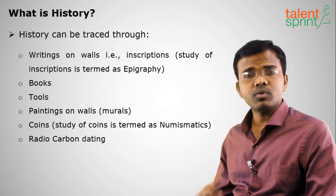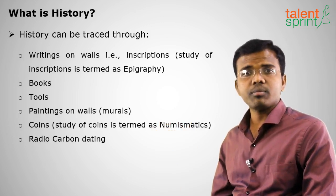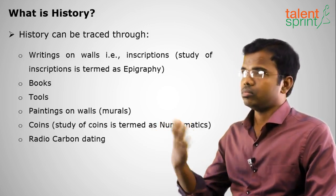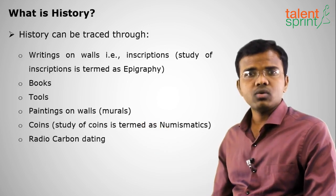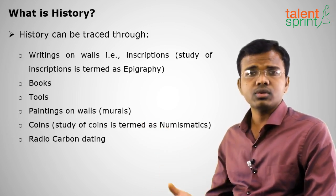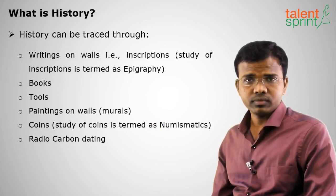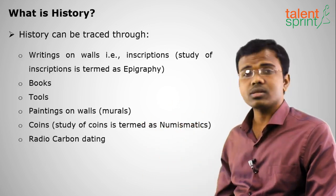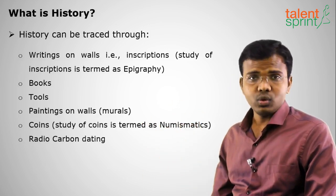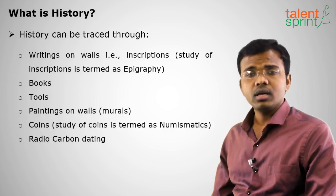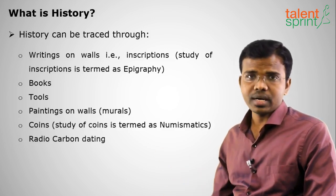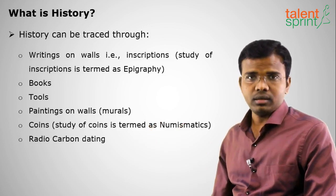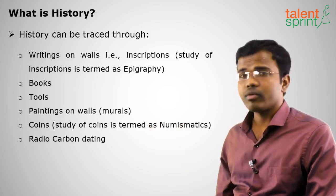Next are coins. Some rulers used to stamp on coins. The Gupta rule is called the golden age because they gave us gold coins. The study of coins is called numismatics. Through coins, we can learn about the past.